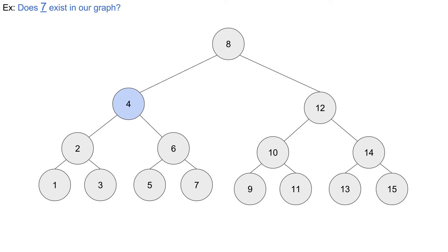Once we get to the 4, we check along the way to see if we found the 7 we're looking for. 4 is not 7, so we go left again and find a 2 — that's not it either — so we go left again to the 1. The 1 is not the number we're looking for, and there's no left child, so we try the right child. The 1 doesn't have a right child either, so we backtrack up to the 2.